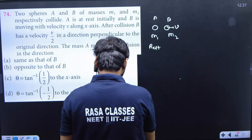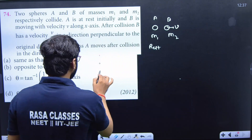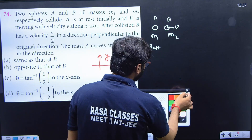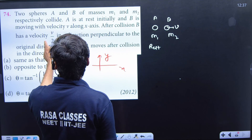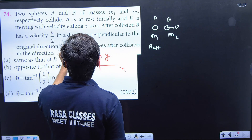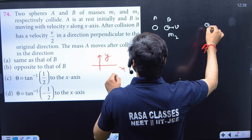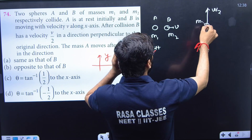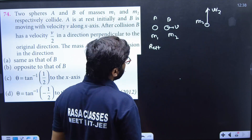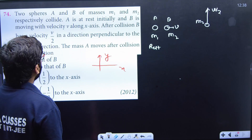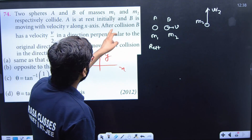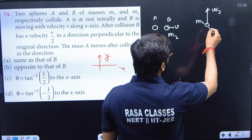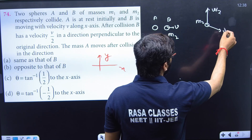You don't need to draw the diagram separately — just understand that this direction is x. After collision, B's velocity becomes v/2 perpendicular, meaning in the y-direction. B's mass is m2. The direction of A after collision is not known, so we can draw it in any direction as a vector.